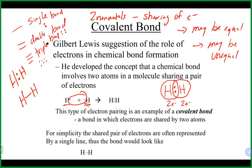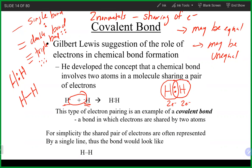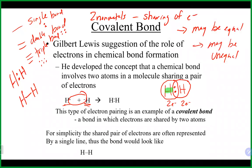What holds the shared electrons in place is an attractive force between the electrons and the nuclei of each atom. Those electrons in the middle feel attraction to the nucleus on the left but also to the nucleus on the right, which locks the electrons into place between the two atoms. It's like two people of equal strength pulling a rope from opposite sides — the rope stays locked in place. That's the idea behind covalent bonds.